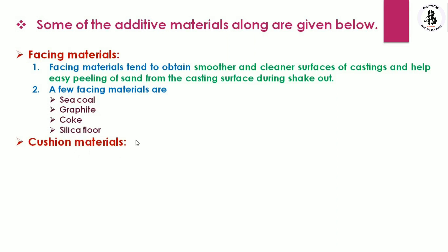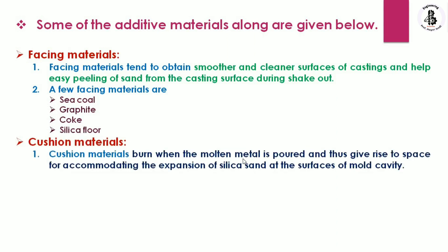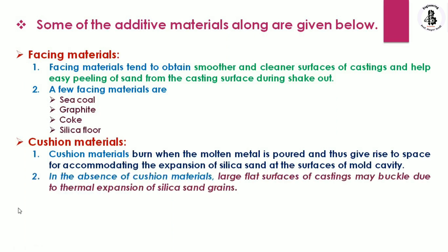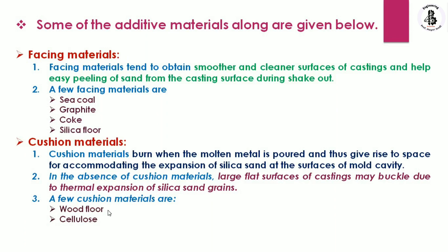Another category of additives is cushion materials. Cushion materials burn when molten metal is poured, creating space to accommodate the expansion of silica sand at the surface of the mold cavity. In the absence of cushion materials, large flat surfaces of castings may buckle due to thermal expansion of silica sand grains. A few cushion materials include wood flour and cellulose.